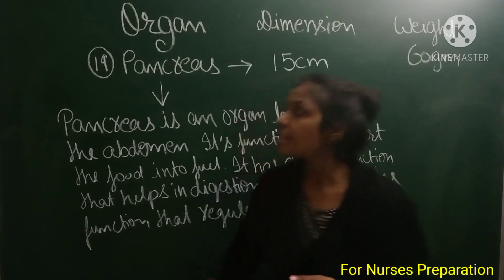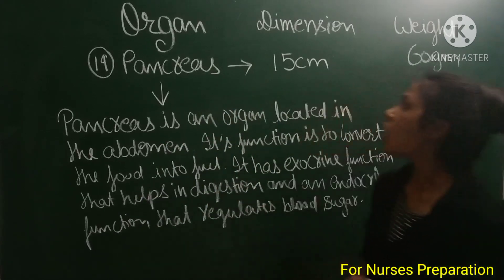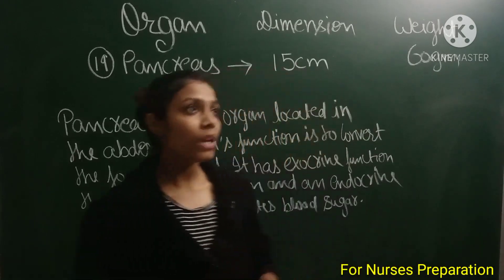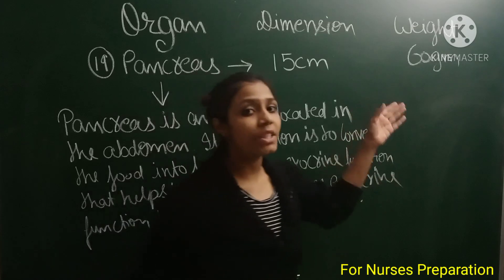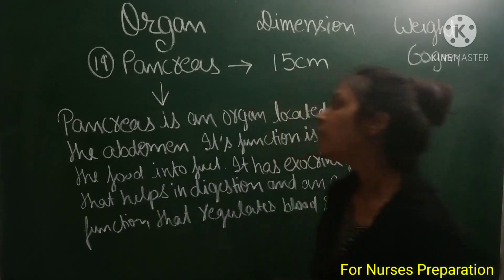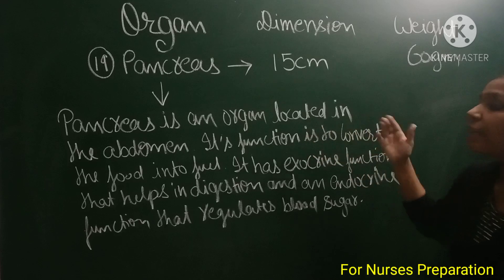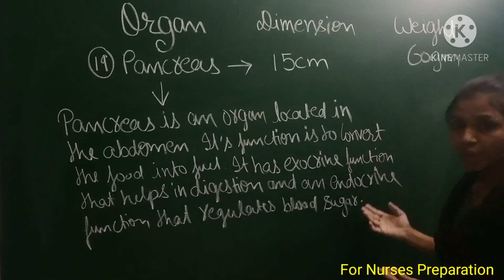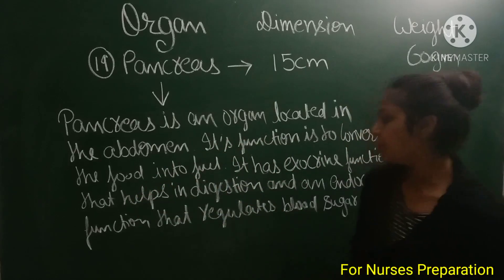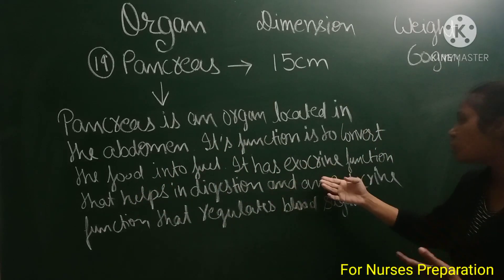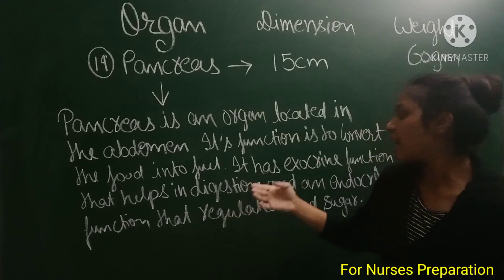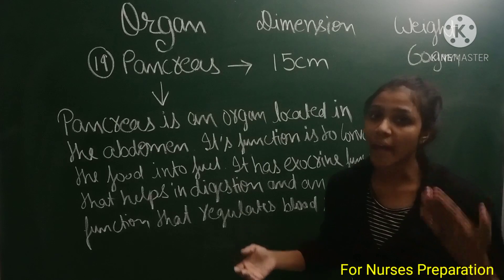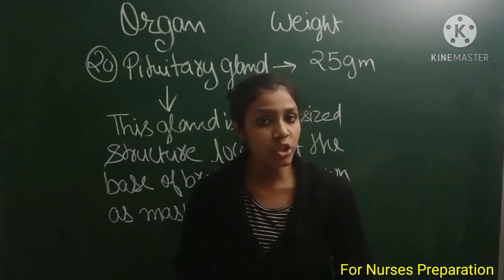Next organ is the pancreas. The pancreas is 15 cm in dimension and weighs 60 grams. It is an organ located in the abdomen. Its function is to convert food into fuel. It has an exocrine function that helps in digestion and an endocrine function that regulates blood sugar.